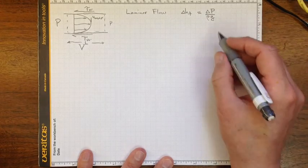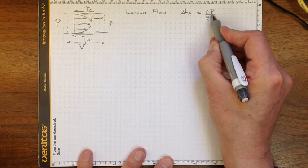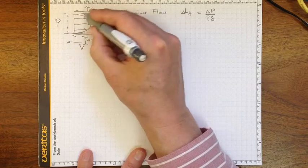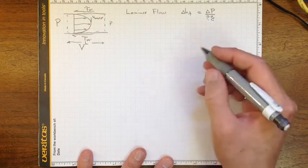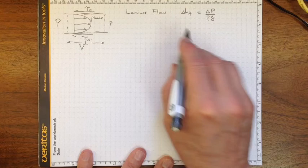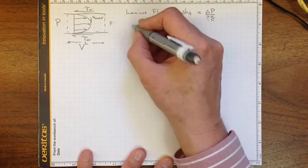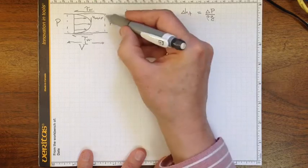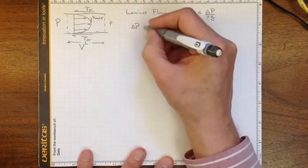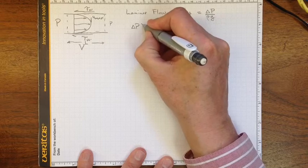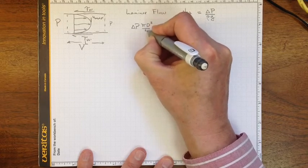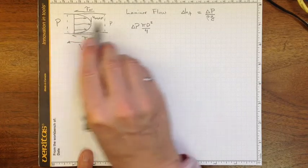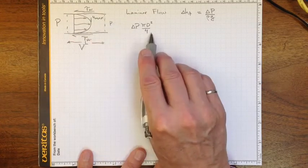Now that pressure drop has to balance out from a force balance with the shear stress applied, so that the pressure force acting in the positive x direction, that'll be delta P times the cross-sectional area of the pipe, that'll be pi d squared over 4. So that's the difference between the pressure force acting on this area, and the pressure force acting on this area, which is smaller.